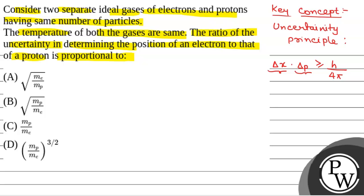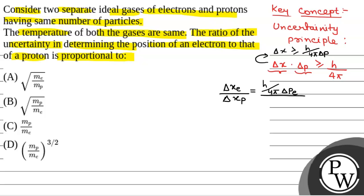So the ratio of uncertainty in position of an electron to that of a proton is delta x of electron divided by delta x of proton. From the uncertainty principle, delta x is greater than or equal to h by 4 pi delta p. So delta x of electron is h by 4 pi delta p of electron, and that of proton is h by 4 pi into delta p of proton.